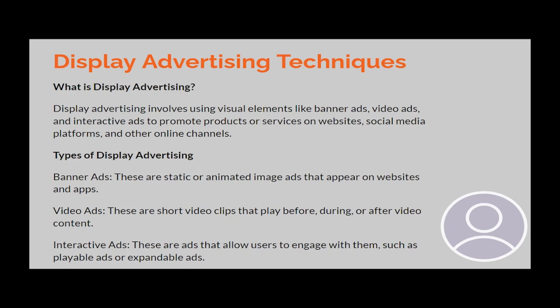There are different types of display advertising. Banner ads are static or animated image ads that appear on websites and apps. For example, when you download a tool to download videos from social media, they show you an ad first before the download. These banner ads are something you've definitely encountered if you spend any time online.